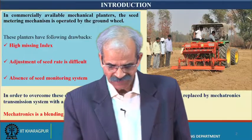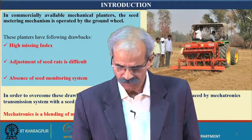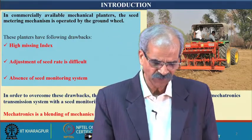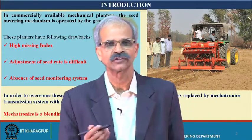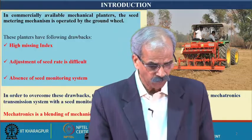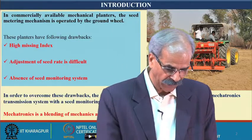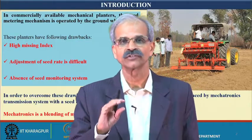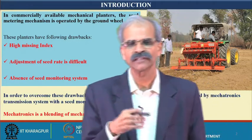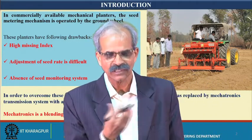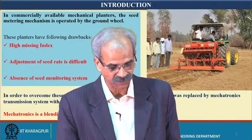In a commercial-level mechanical planter, the seed metering mechanism is operated by the ground wheel. The drawbacks of this are: high emission, adjustment of seed rate is difficult, and absence of a seed monitoring system — we are not in a position to monitor. These are some of the important difficulties we faced with this equipment.